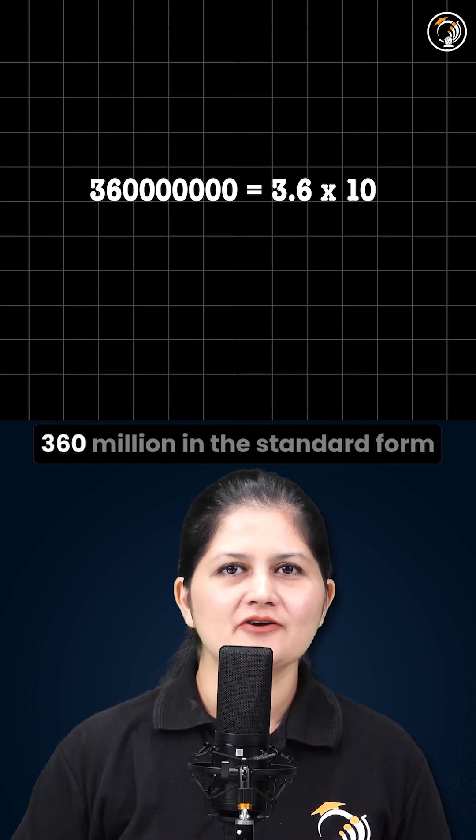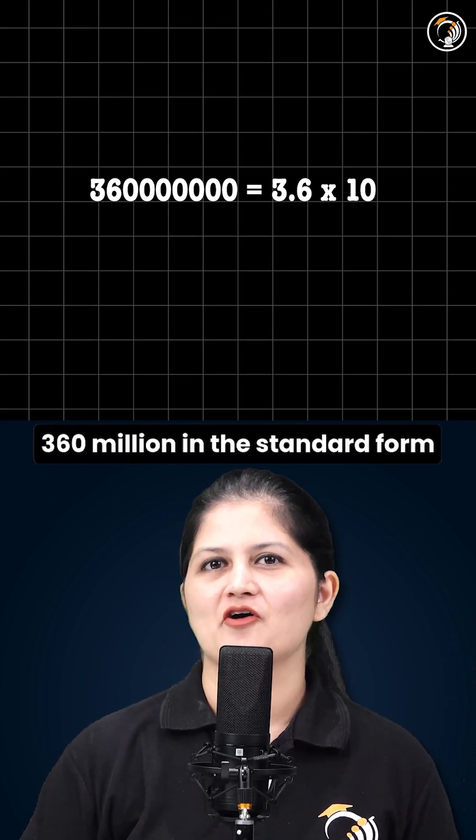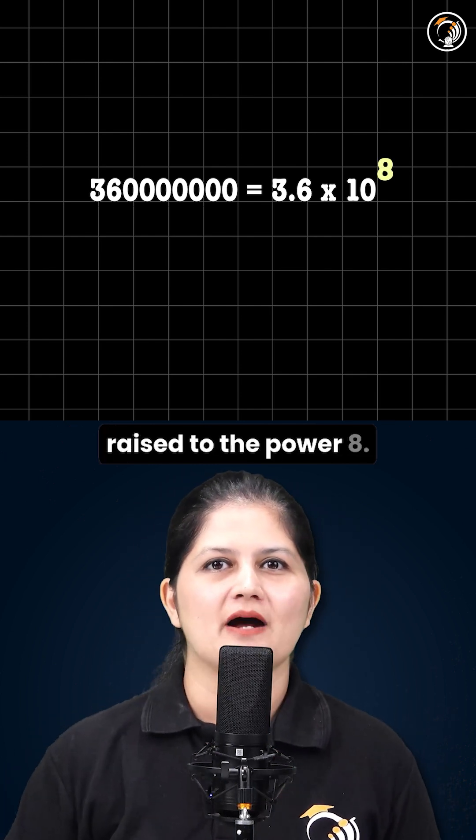Taking an example, 360 million in the standard form will be written as 3.6 into 10 raised to the power 8.